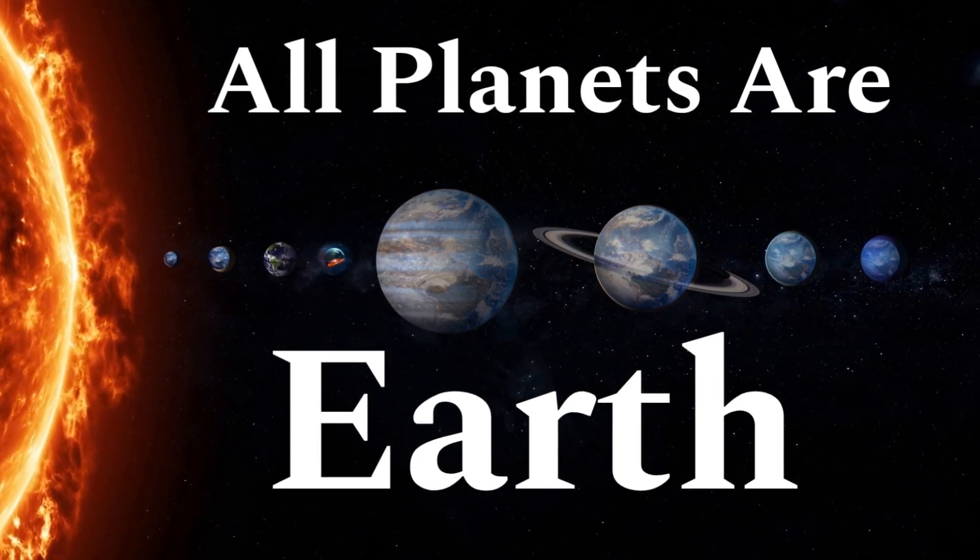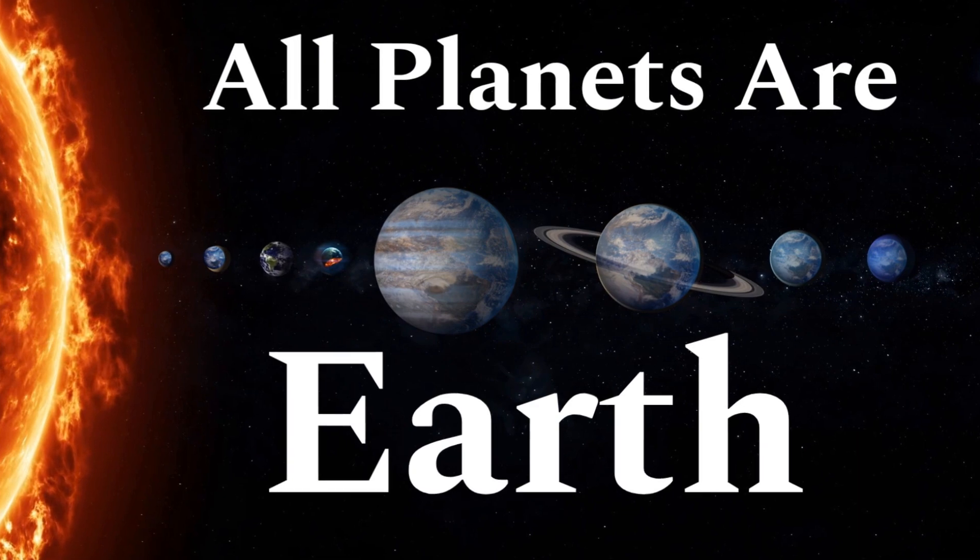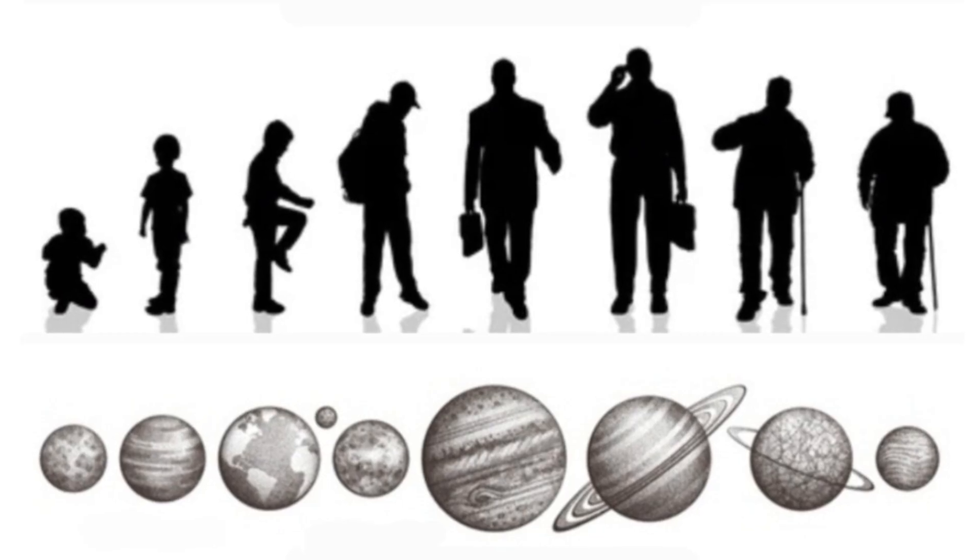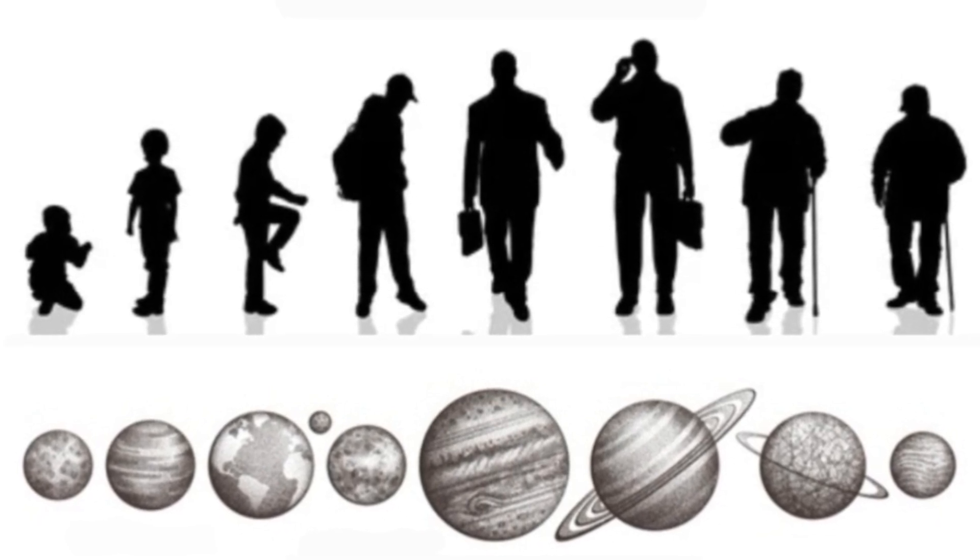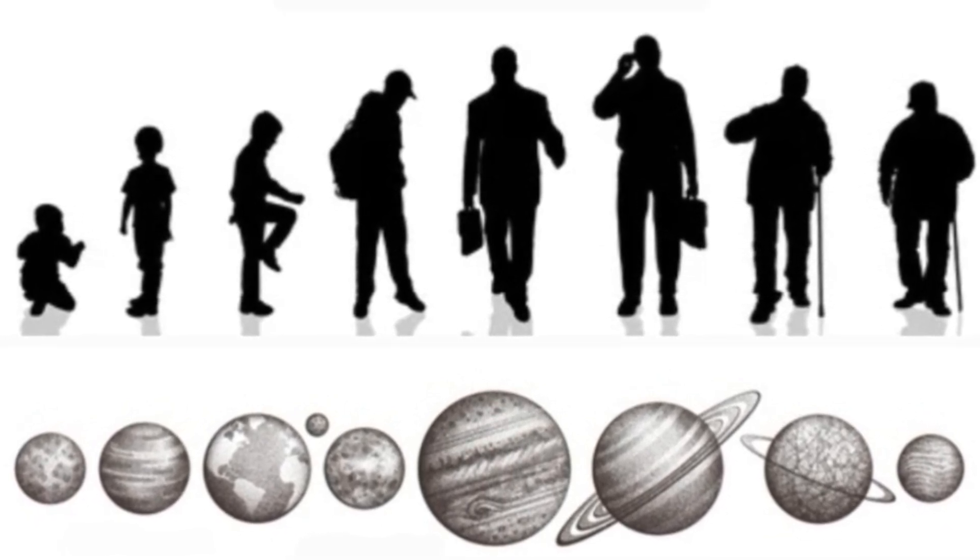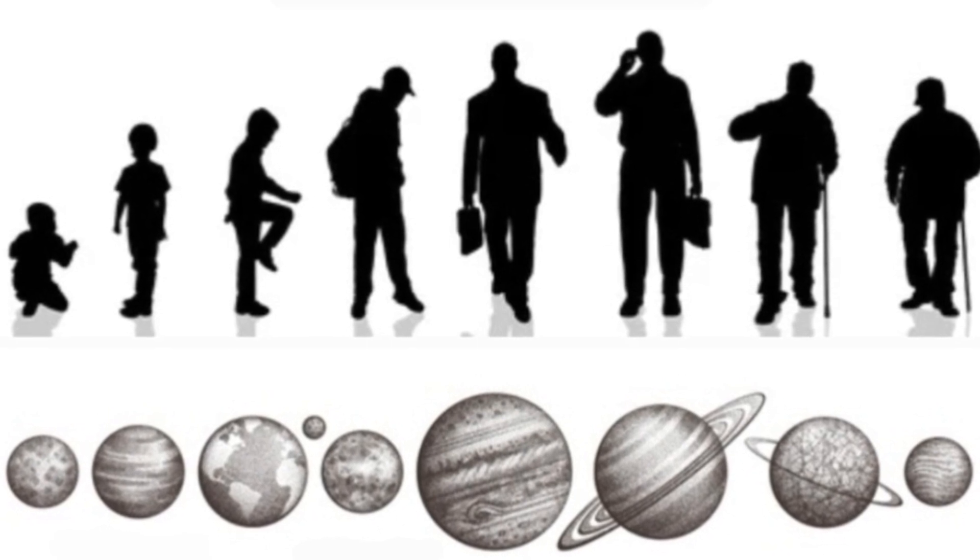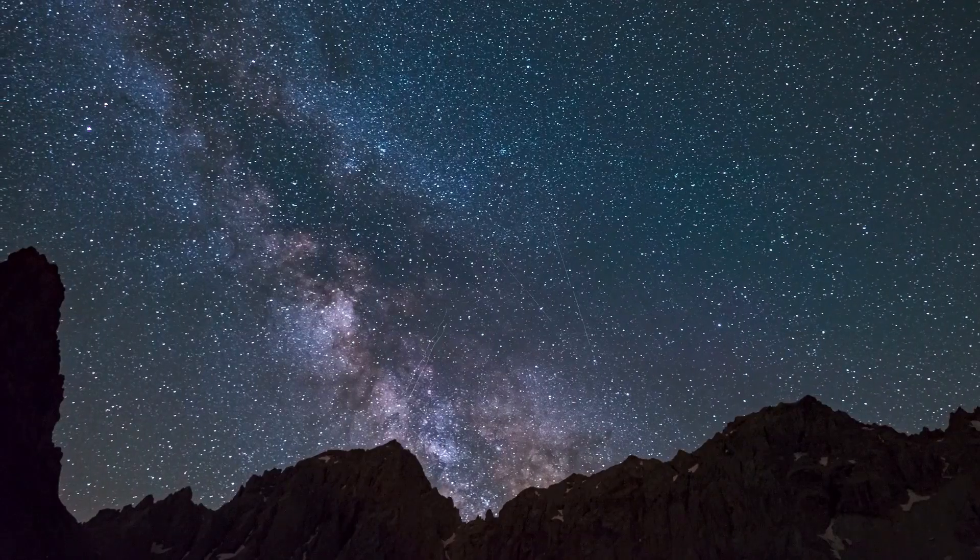Ever heard of the uniplanetary evolution theory? It's a captivating concept that suggests each planet in our solar system represents a different stage of Earth's evolution. Imagine looking at a cosmic gallery of Earth's past, present and future, all at once.